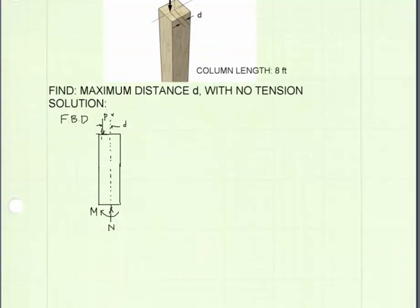I've begun by drawing a free-body diagram of our column. It shows the eccentric load P, acting at a distance d from our vertical x-axis. At the bottom of our post, we have our resultant forces, a normal force acting in the vertical direction, and also a moment. Summing our forces in the x-direction, we find that our normal resultant force is equal to the load P.